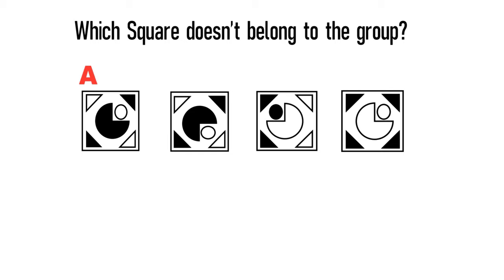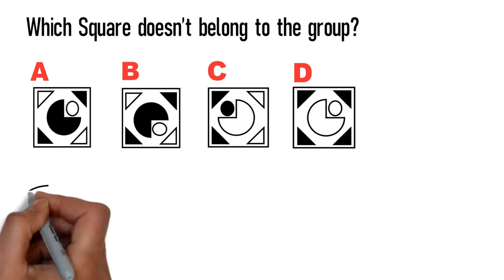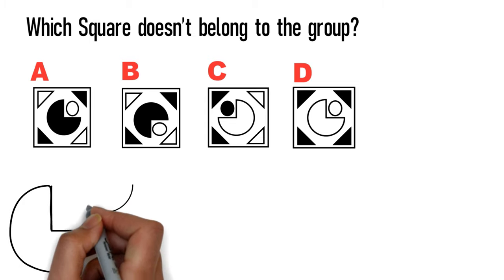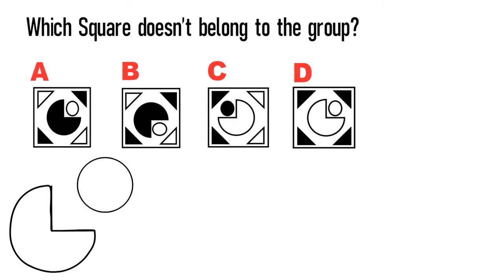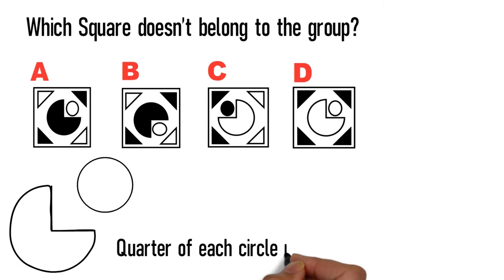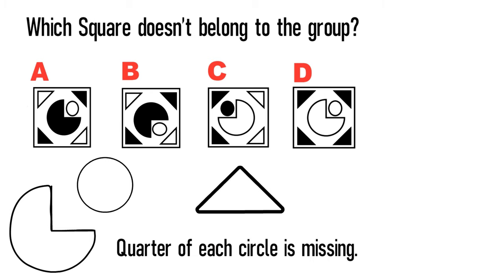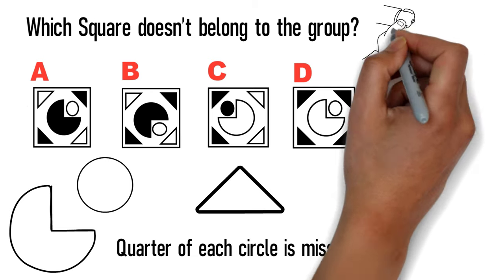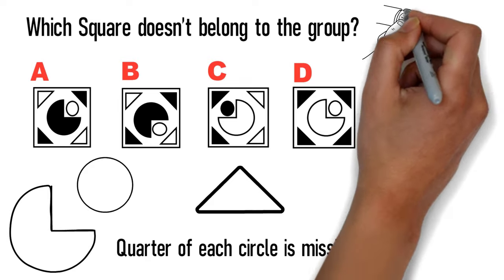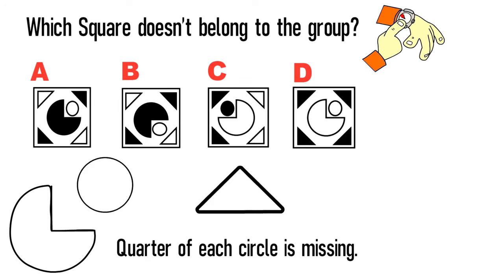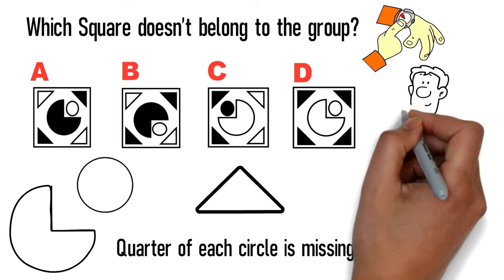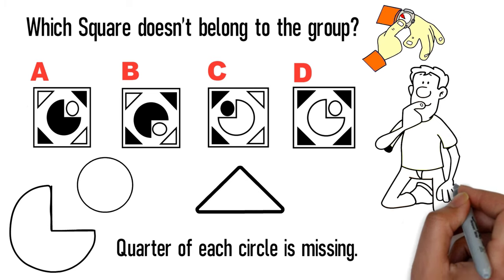Each square contains two circles inside. In the large circle, a quarter of each circle is missing and instead replaced with a small circle. All squares also have triangles in the corners. Give yourself 5 to 10 seconds to see if you can come up with the answer.